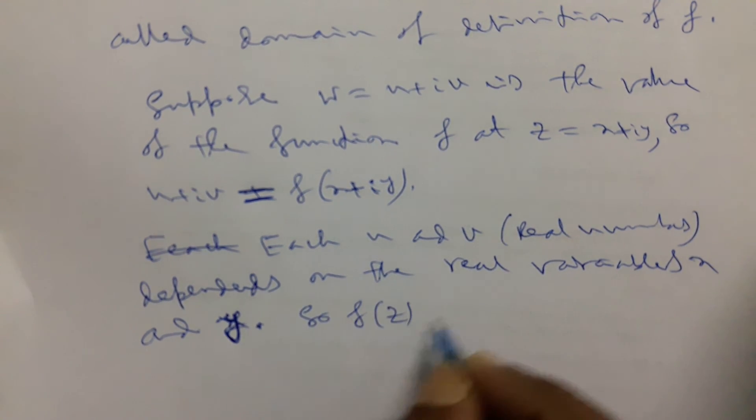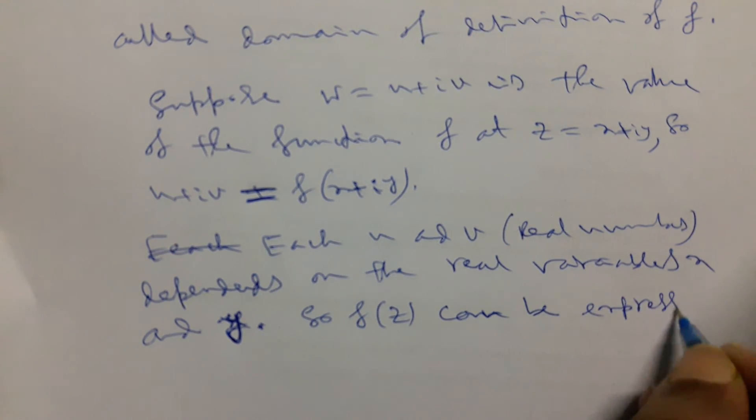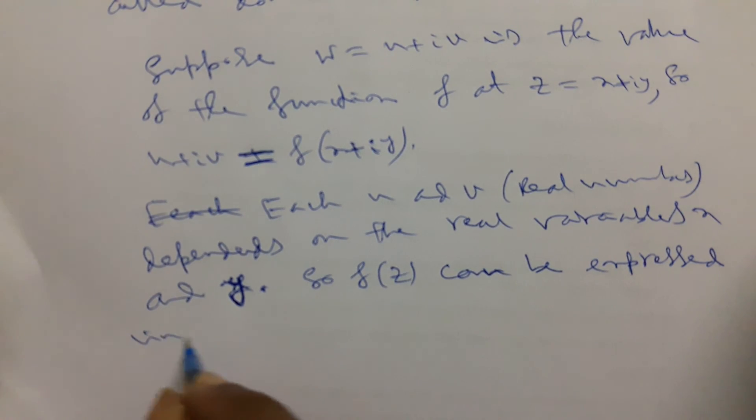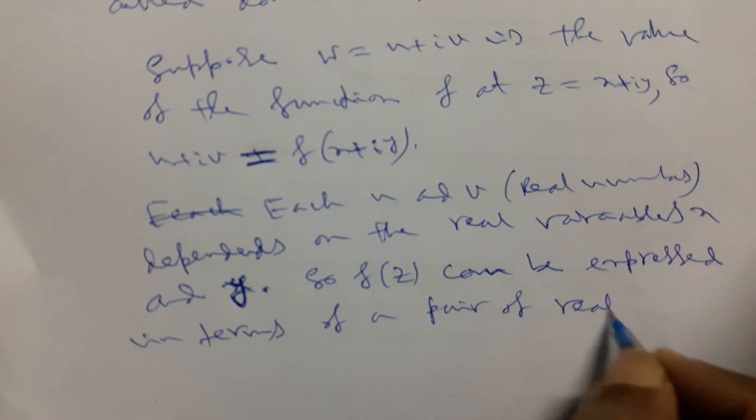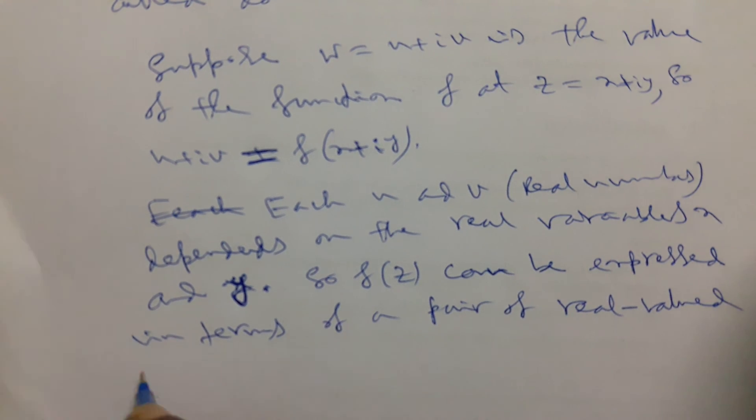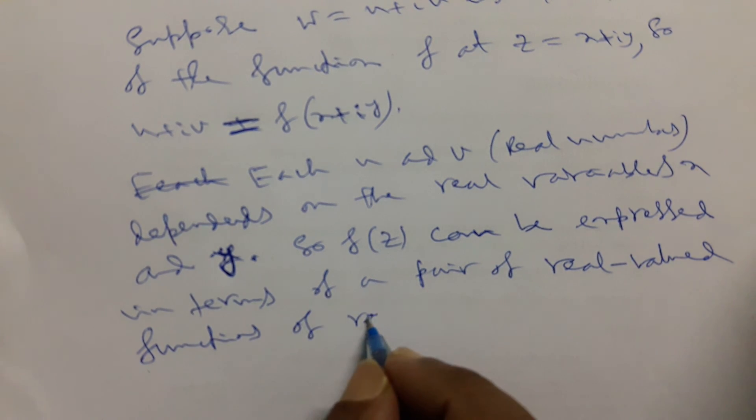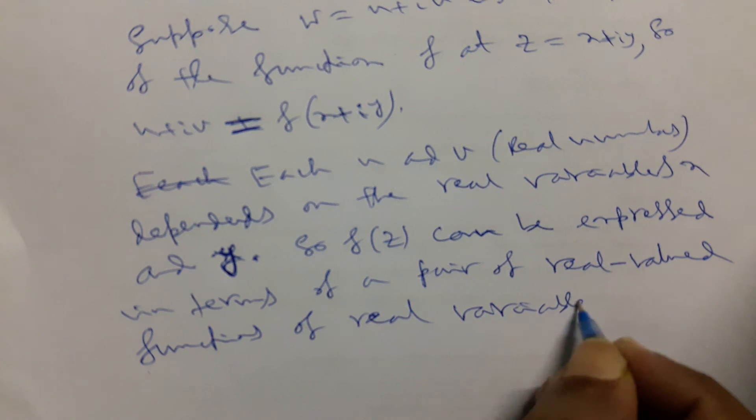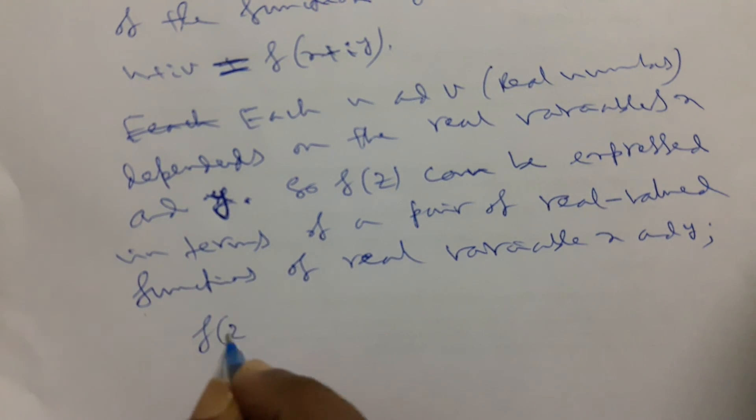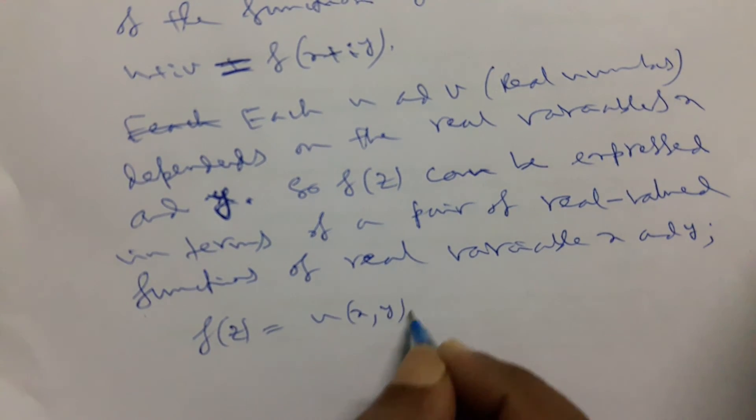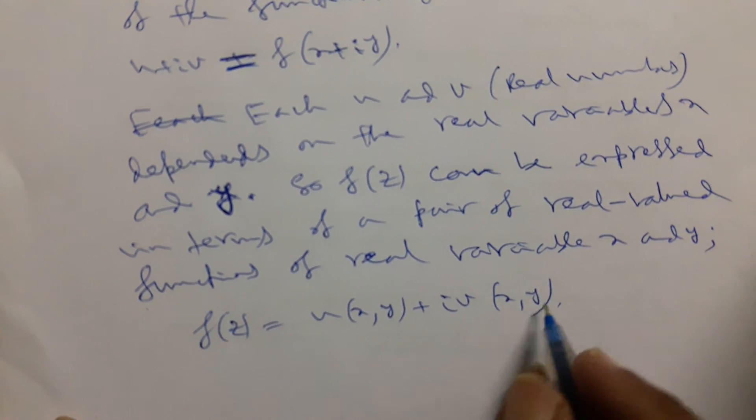So f of z can be expressed in terms of a pair of real valued functions of real variables x and y. That is, we can write f of z equals u of x,y plus i v of x,y.